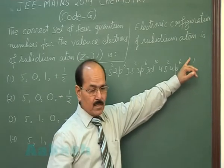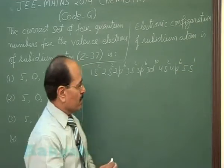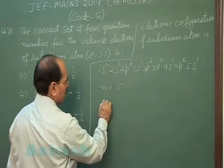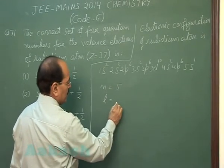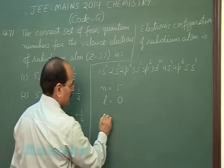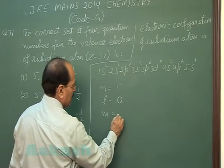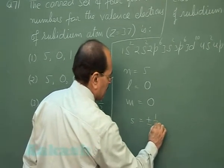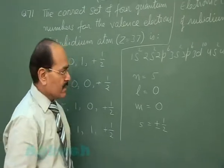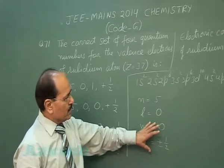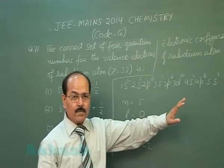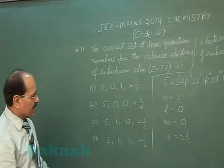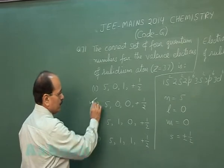So the 4 quantum numbers of the outermost electron are: principal quantum number n = 5, azimuthal quantum number l = 0, magnetic quantum number mₗ = 0, and spin quantum number = ±½. These are the correct set of quantum numbers for the outermost electron of rubidium atom. The correct answer is option 2.